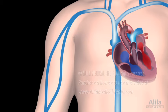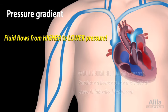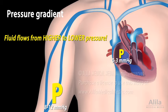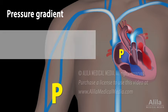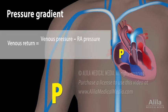Venous return is achieved by several mechanisms. Pressure gradient: the difference between venous pressure and right atrial pressure is the major force driving peripheral blood back to the heart. In fact, venous return can be determined as the venous pressure gradient divided by venous resistance.